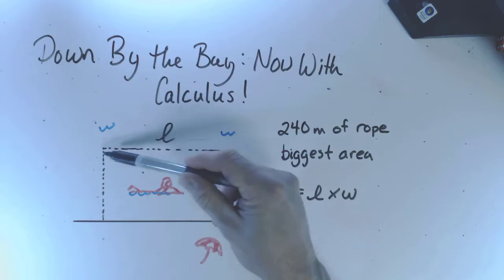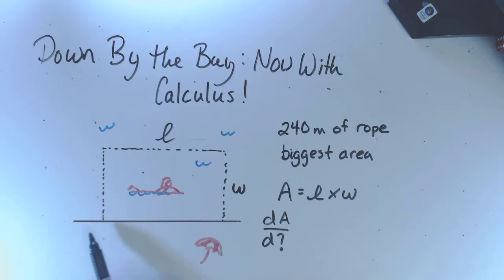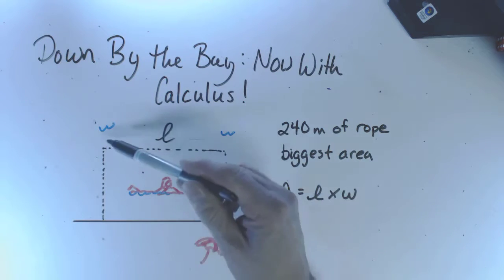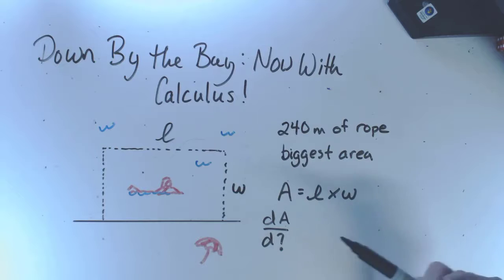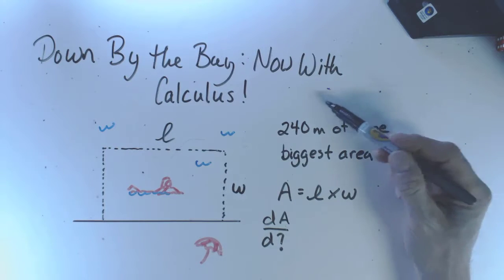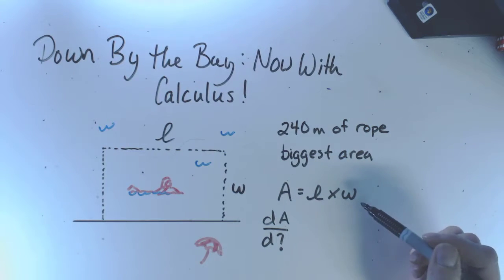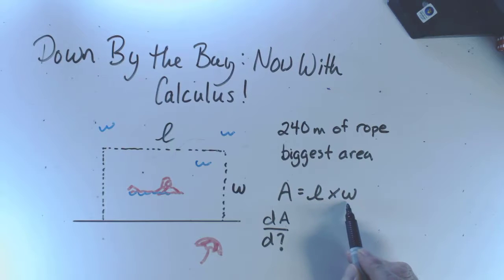The beach runs along here like a straight black line, and you don't have to put the buoys along this side of this rectangle. So your job is to maximize the area, and of course the area is the length times the width.